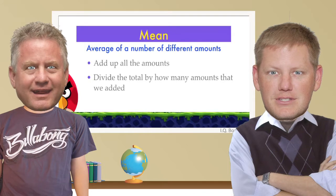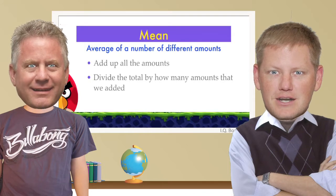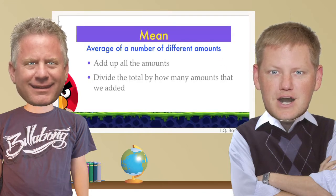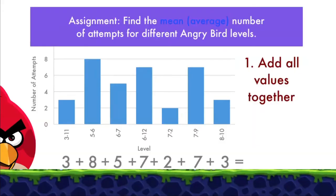So the amounts are like the attempts, Mr. Ruff? That's correct. So here, check out this slide. Our first step is to add all the values together. So the first level was three, then eight times on the next level, then five times, seven times. I want you to add all of those attempts up, and then I'm going to have the students do the same thing.